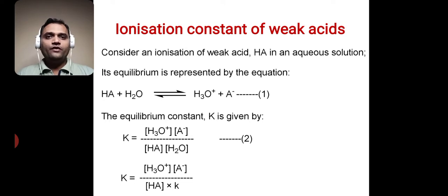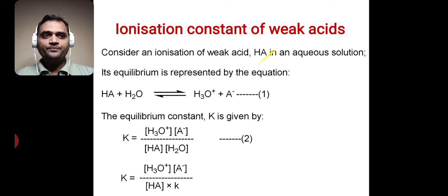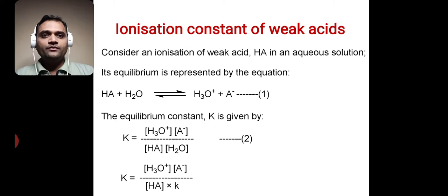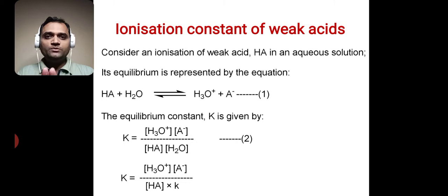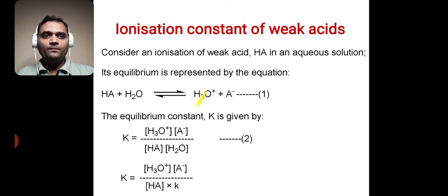For that we have to consider the ionization of a weak acid HA in an aqueous solution, and its equilibrium is represented by equation 1. The weak acid HA undergoes ionization in aqueous solution, dissociating to form H⁺ and A⁻. That H⁺ combines with H₂O to form the hydronium ion H₃O⁺, giving H₃O⁺ plus A⁻.